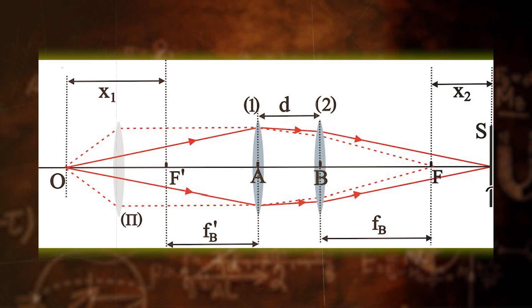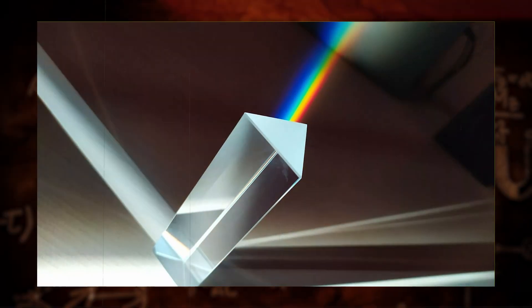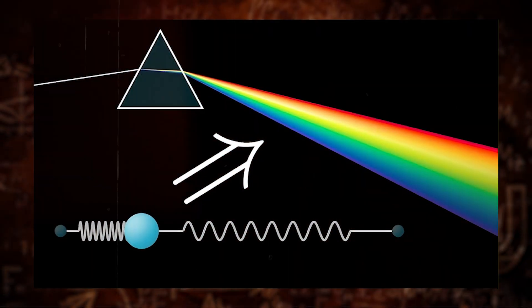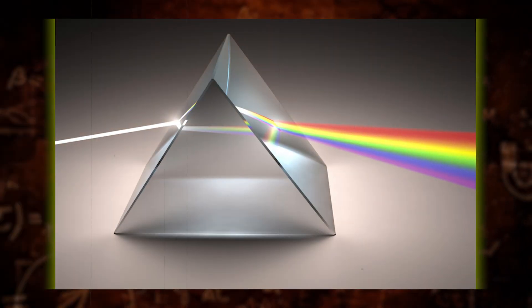color, and the properties of lenses. His experiments with prisms demonstrated that white light is composed of a spectrum of colors, laying to rest earlier misconceptions about the nature of color itself.